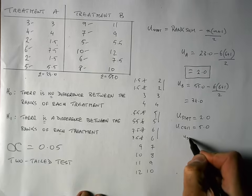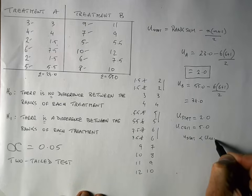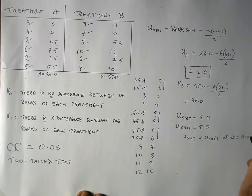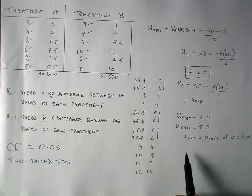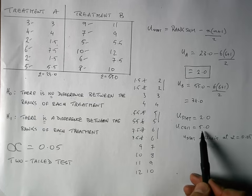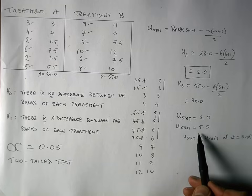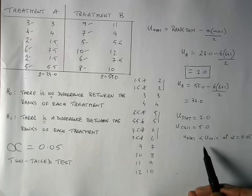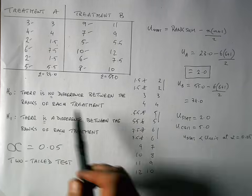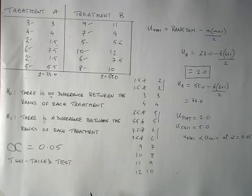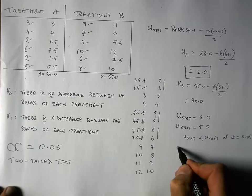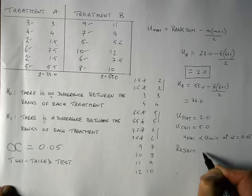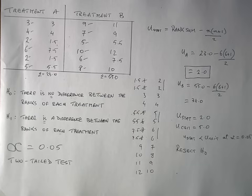My U statistic of 2.0 is less than my U critical of 5.0 at alpha equal to 0.05. To be statistically significant, the obtained U value has to be equal to or less than the critical value — this is different from other tests where the obtained value usually must be equal to or greater than the critical value. Since our U statistic is less than our U critical, we have found a difference. We conclude that the difference between the ratings for the two treatments is unlikely to have occurred by chance, so we reject the null hypothesis that there is no difference between the ranks of each treatment, in favor of the alternate hypothesis that there is a difference.